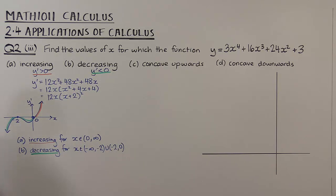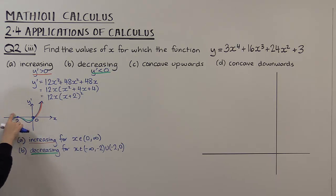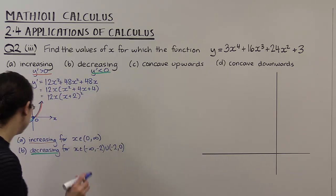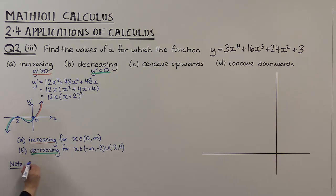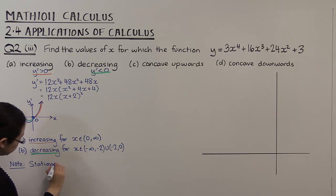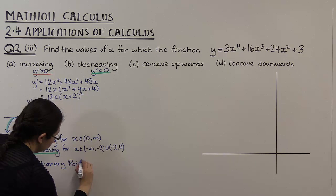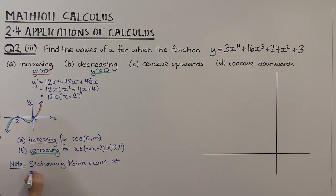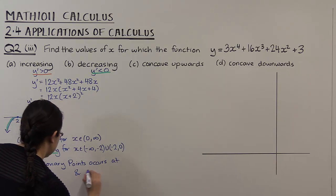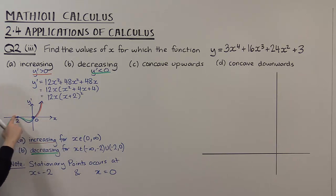Now while we're talking about the first derivative, let's note that there are stationary points at x equals minus 2 and x equals 0, because that's where y' equals zero. We'll put that together on a sketch and then talk about concavity.